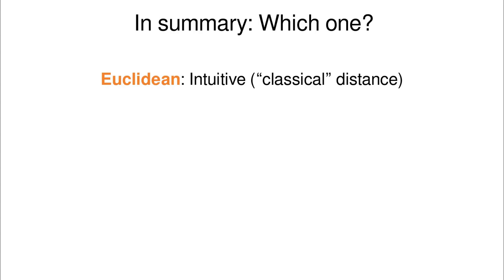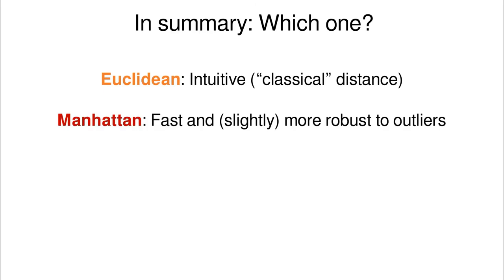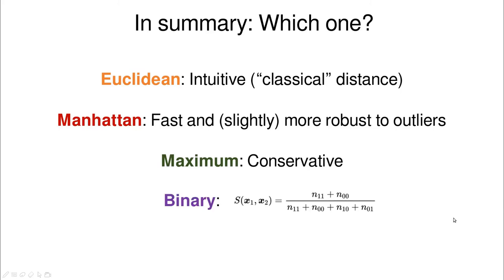So in summary, if you don't want to think much about it, the Euclidean distance is the default one, and it's going to work pretty well. The Manhattan is better in many senses, it's faster, and it's slightly more robust to outliers. If you want to be conservative with the definition of clusters, you have to use the maximum distance. And for binary data, you have this expression that looks like the accuracy but has nothing to do, because we're comparing different observations which are categorical.